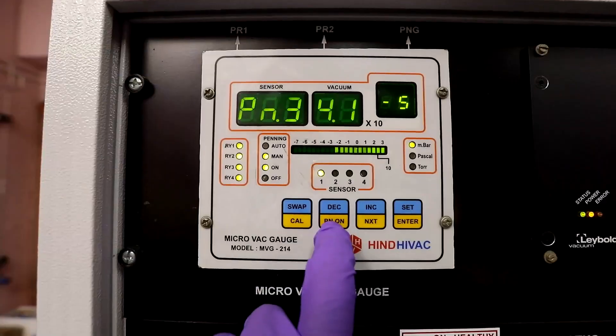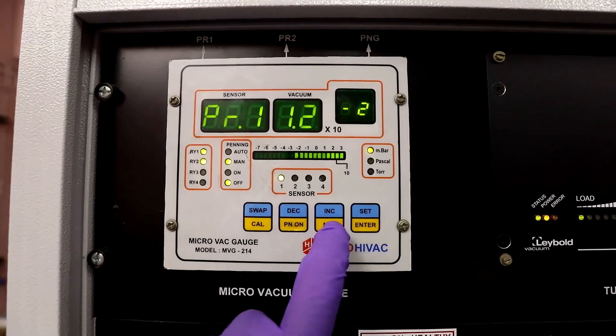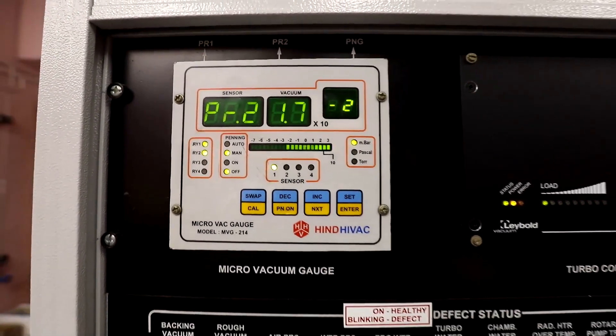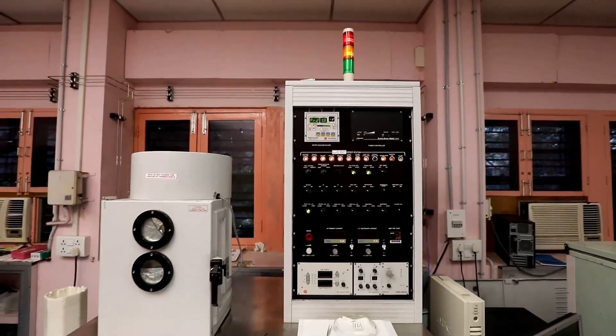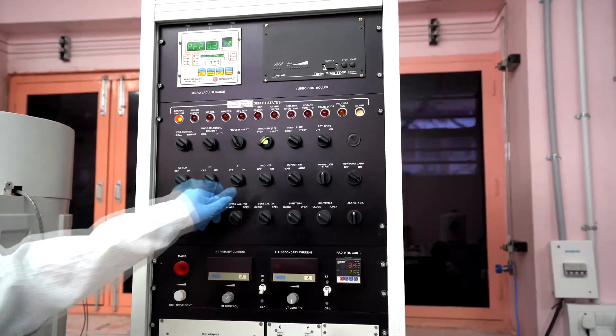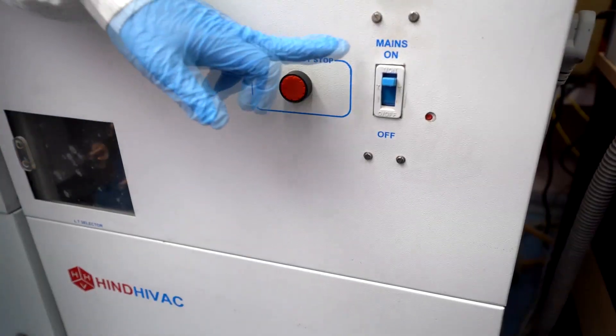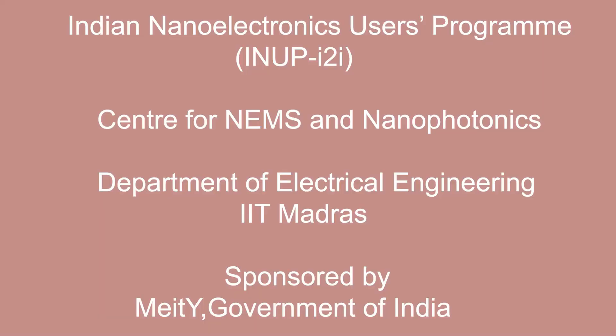At the end, let us close the chamber and create the roughing pressure at 10 to the power of minus 2 millibar inside. Switch off all switches in the reverse order as we did at the start of the process.